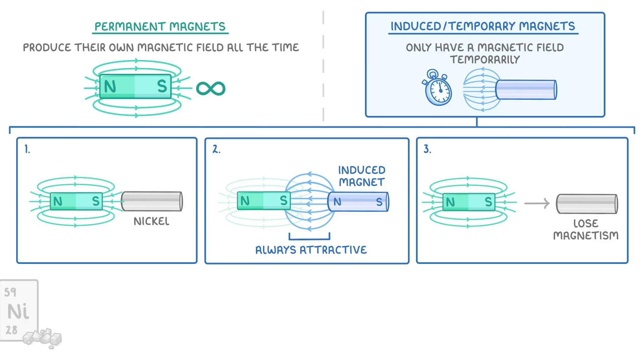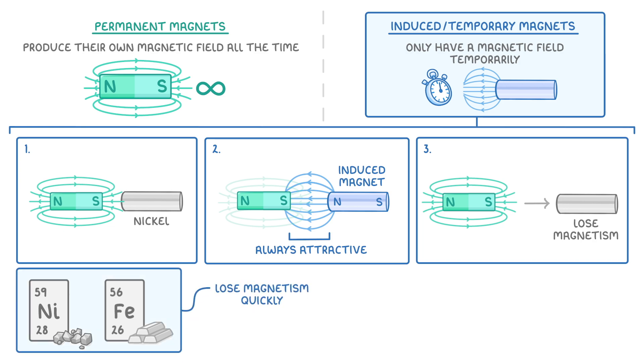Some magnetic materials, like nickel and iron, lose their magnetism really quickly, and we call these magnetically soft materials.